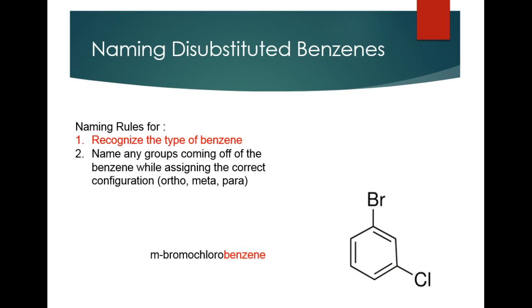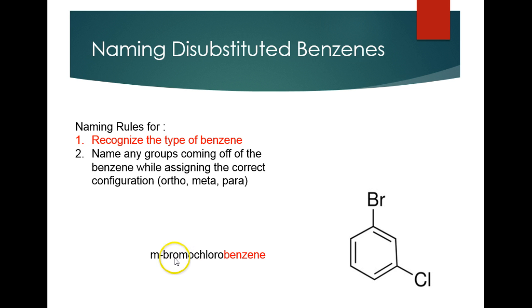Here's another disubstituted benzene example. We recognize it as a benzene and name the groups coming off. We have a bromo and a chloro, and it's in the meta position, so we would call it m-bromochlorobenzene. Something to keep in mind: both substituents should be in alphabetical order, so that's why we put bromo in front of chloro — m-bromochlorobenzene.